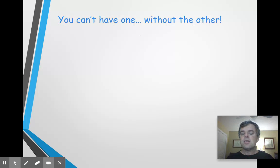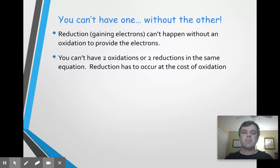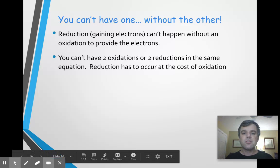Now, you can't have one of them without the other. If something is losing electrons, something else has to gain electrons. We don't do reactions where electrons just go flying off into outer space. So, both of them happen simultaneously. In other words, you can't have two oxidations or two reductions. You have to have one of each.